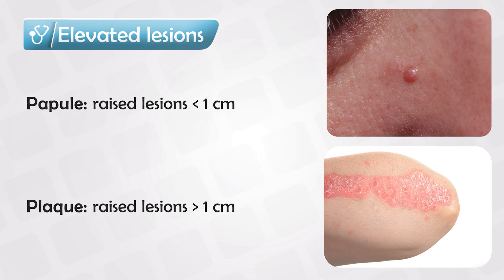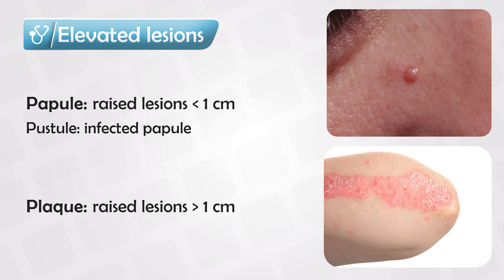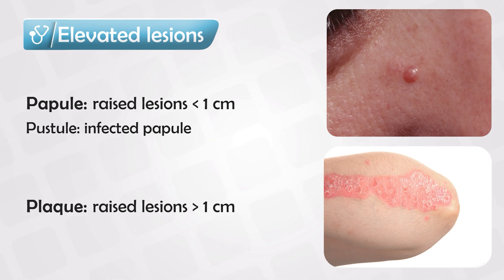Keep in mind, if the papule — which is a small raised lesion — becomes infected and has pus inside it, it will be known as a pustule instead of a papule. The examples we have for papules are, of course, acne. And the example we have for plaques is psoriasis.